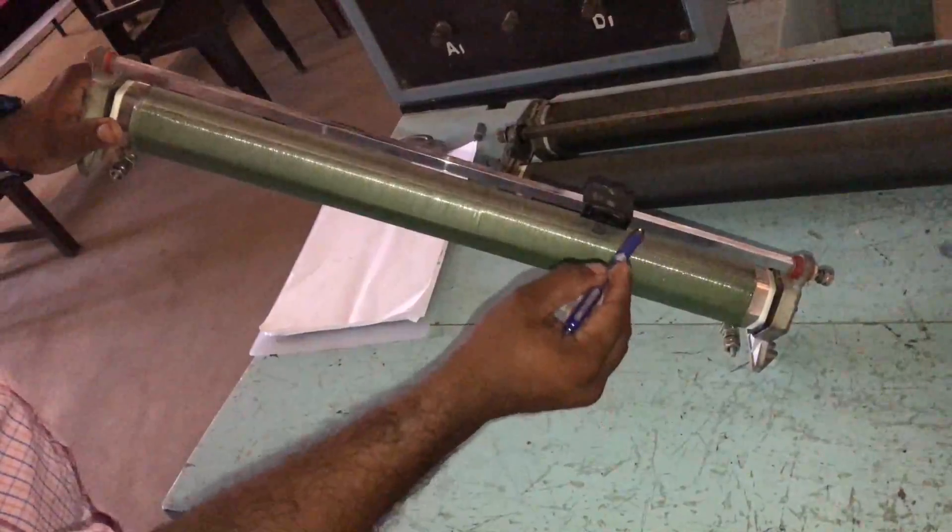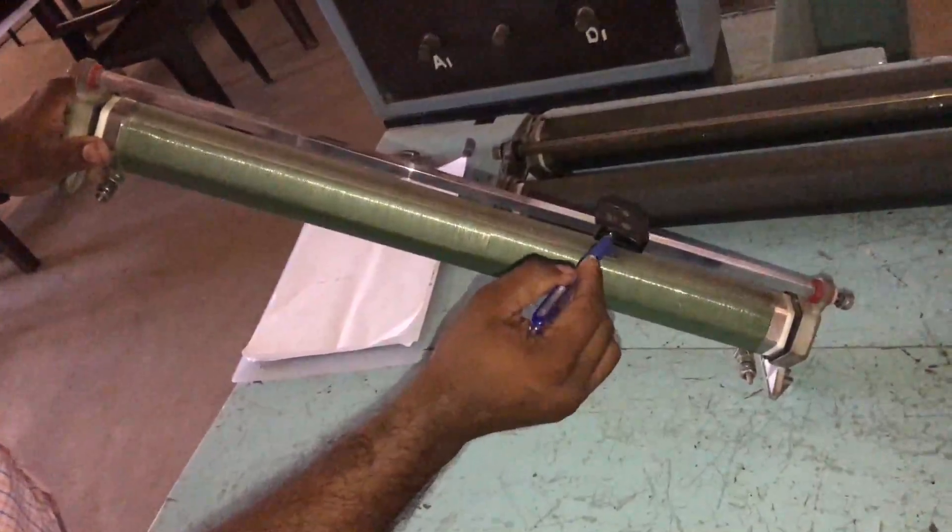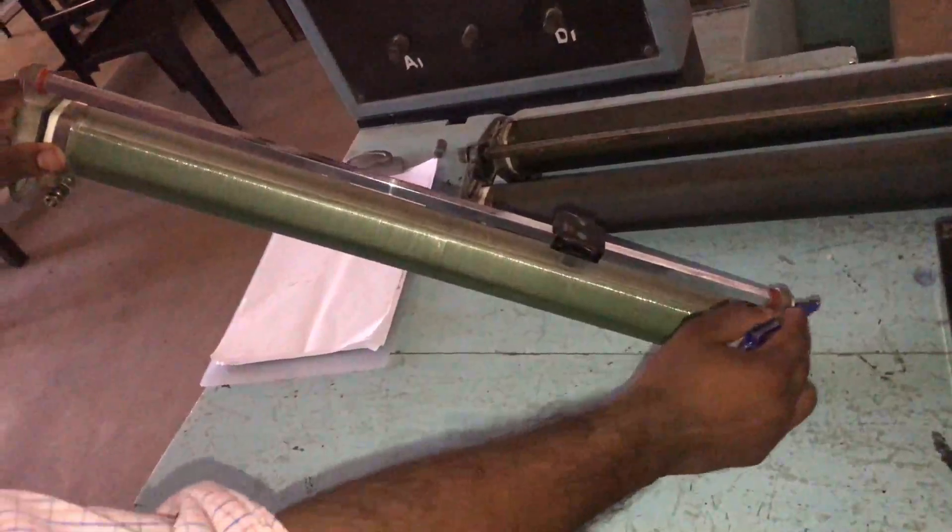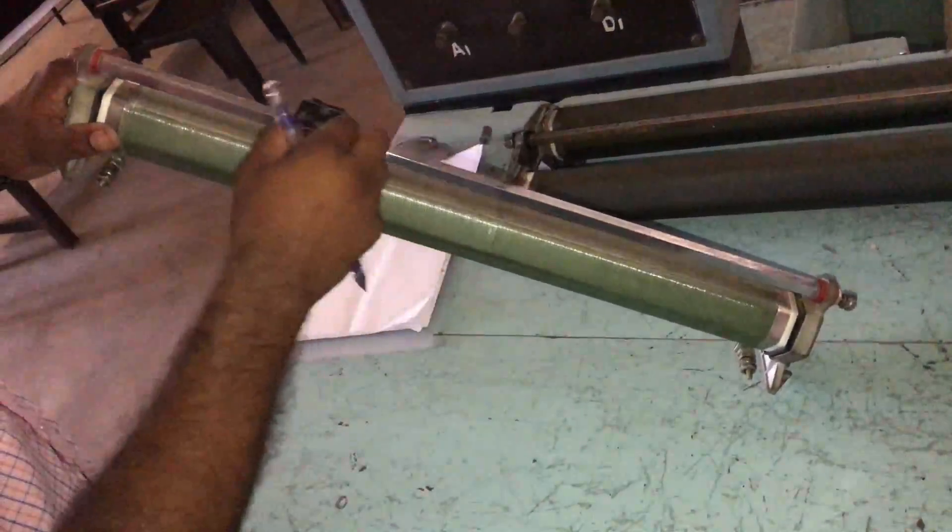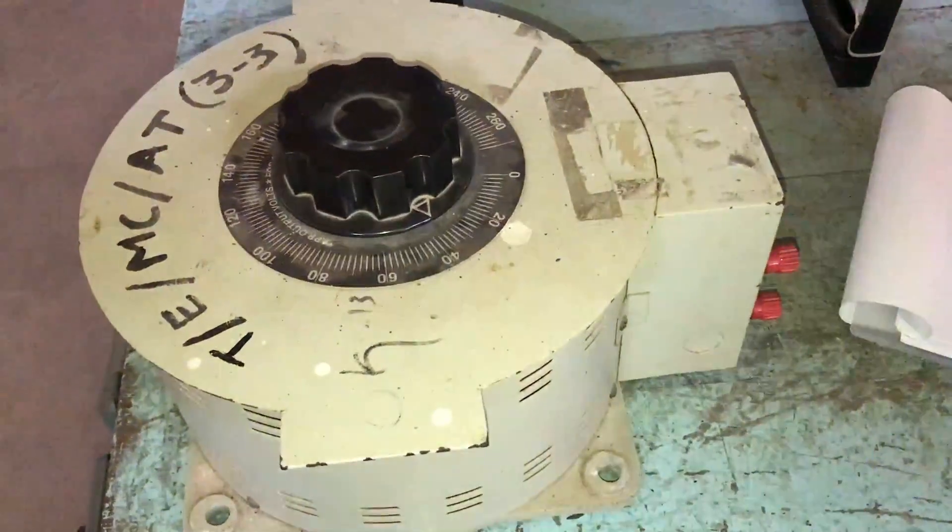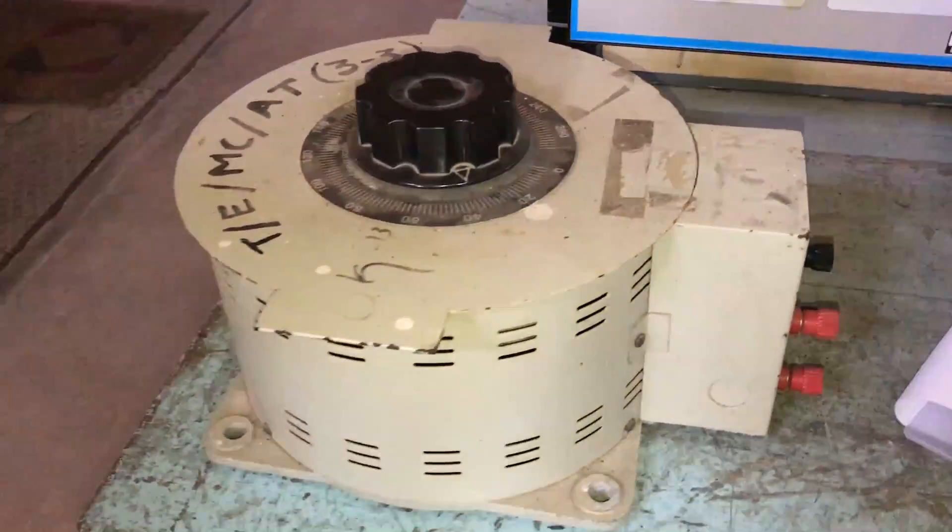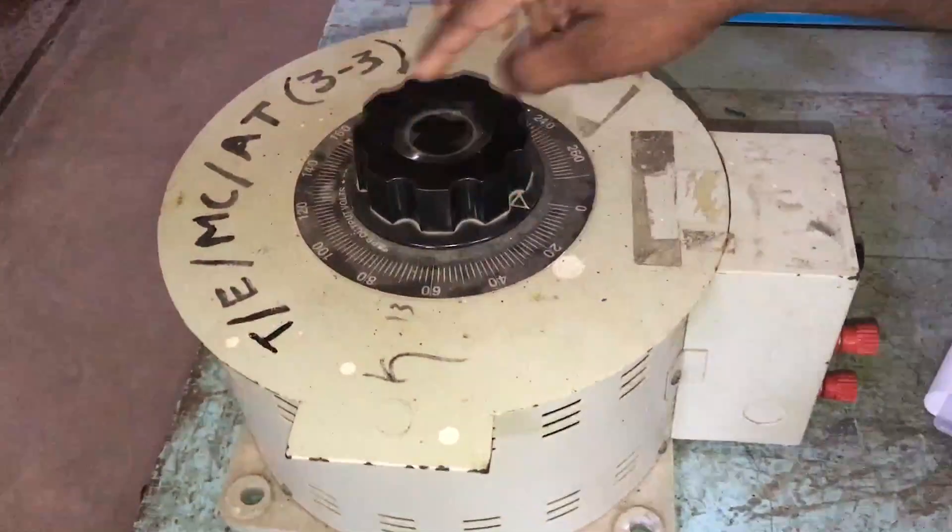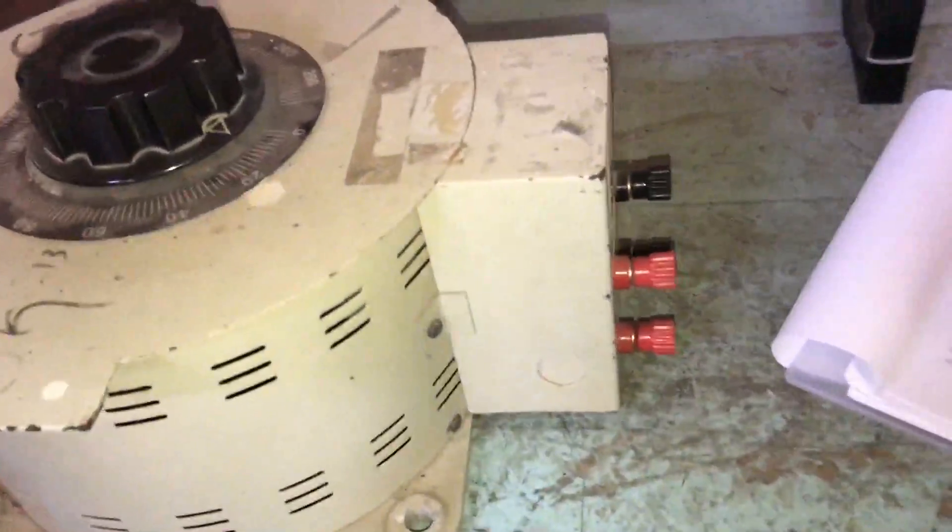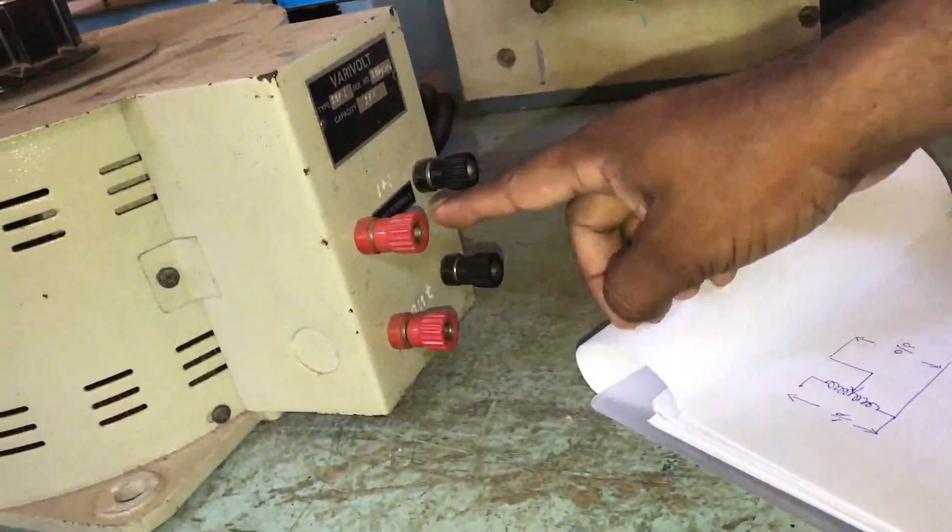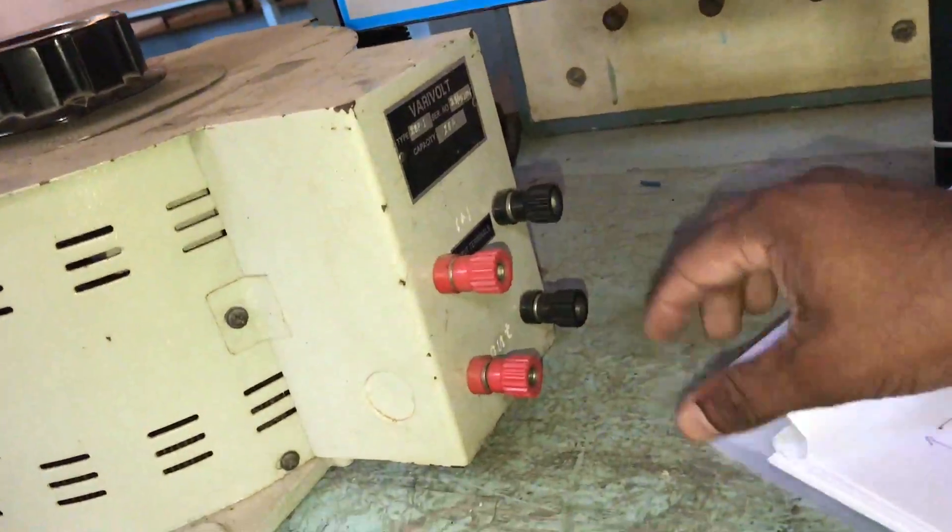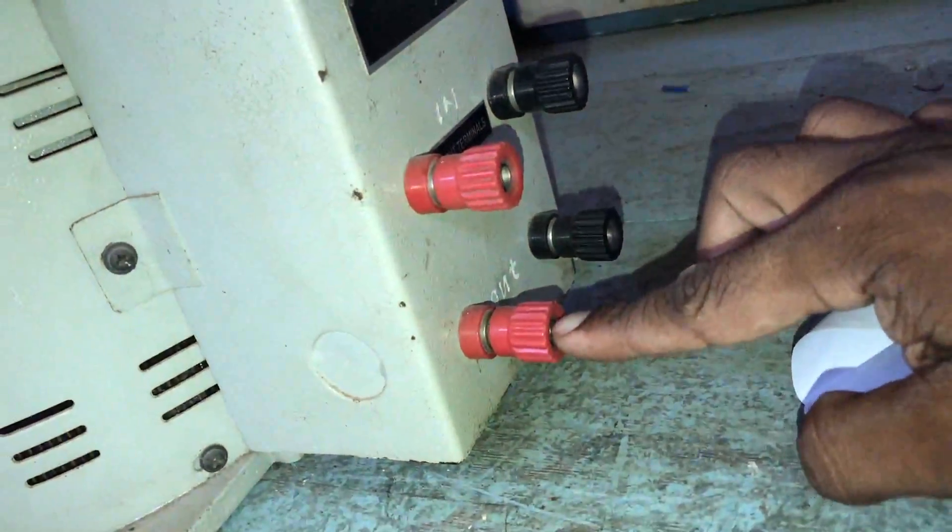This is the auto transformer. Auto transformer has a single winding. This is the variable point, zero point to maximum point, zero to 260. It has four terminals: red indicates the phase, black indicates the neutral. The other same point: red indicates the phase and black indicates the neutral.